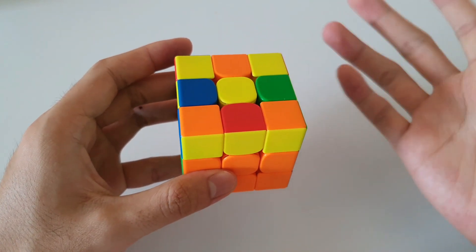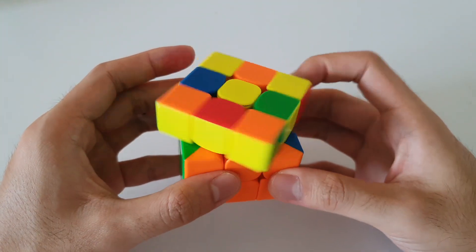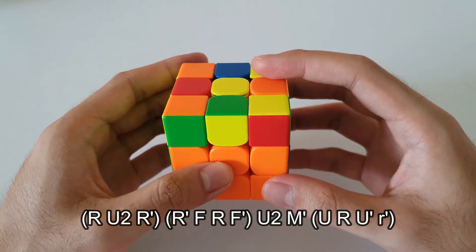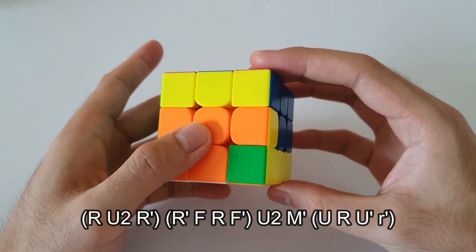Alternatively, for this case, there is a separate algorithm for it as well. I'll show it here just for those who might be interested. So the algorithm will start off with a R, U2, R' going into a sledgehammer.